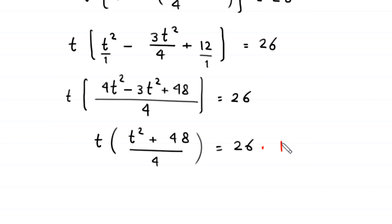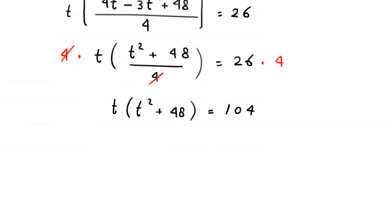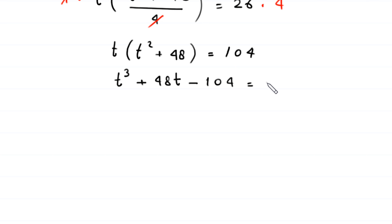Multiplying both sides by 4, the 4 cancels on the left, and we are left with t times t squared plus 48 equals 26 times 4, which equals 104. Distributing t gives t cubed plus 48t, and moving 104 to the left gives t cubed plus 48t minus 104 equals 0.